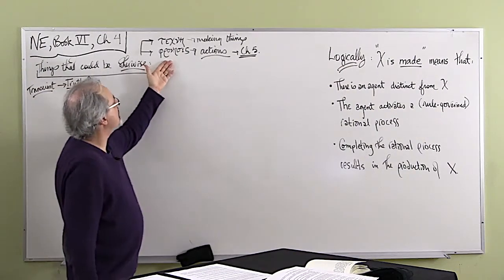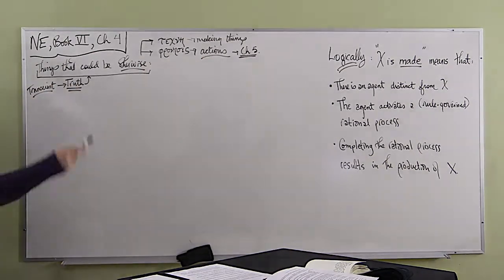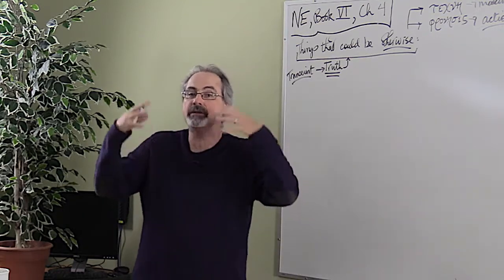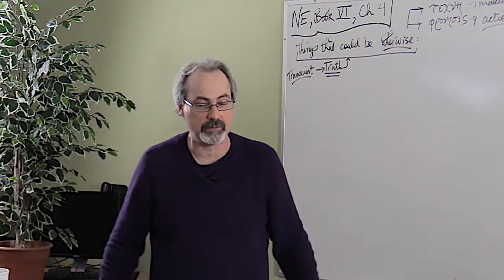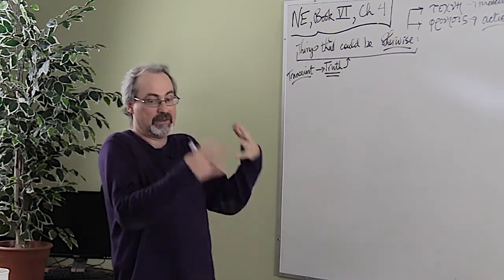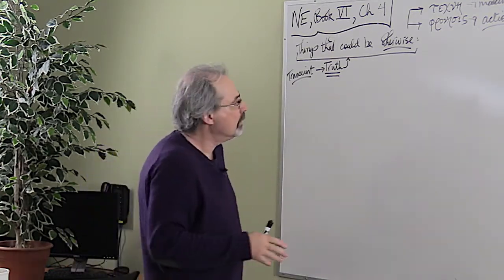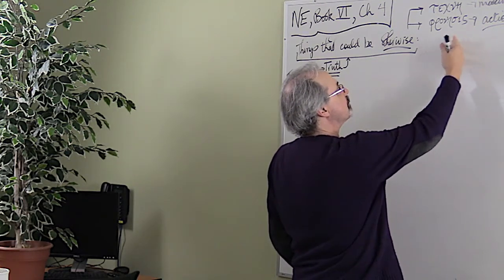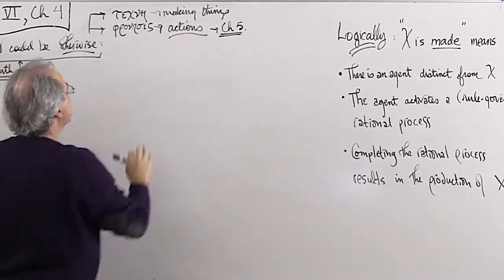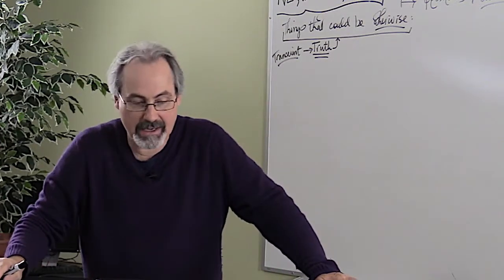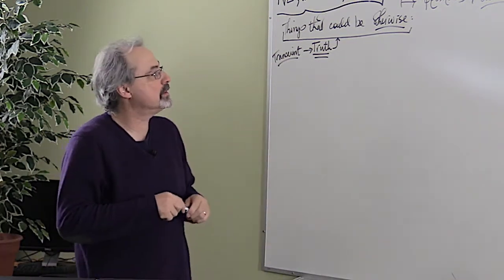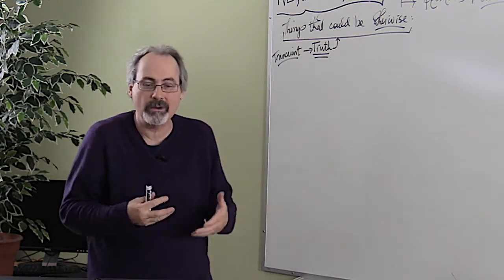And Chapter 5 will be with phronesis, dealing with actions. All right, so we're dealing with things that could be otherwise. These are transient truths, so it's that calculative part of the soul that is grasping, remember, in possession of transient truths. So again, it's not opinion or belief, right? Because opinion and belief doesn't actually possess truth the way that these modes of the soul, these dispositions of the soul, are actually in possession of truth. All right, so these are, I'm using the term like making things for techne, and for phronesis, I'm talking about actions.